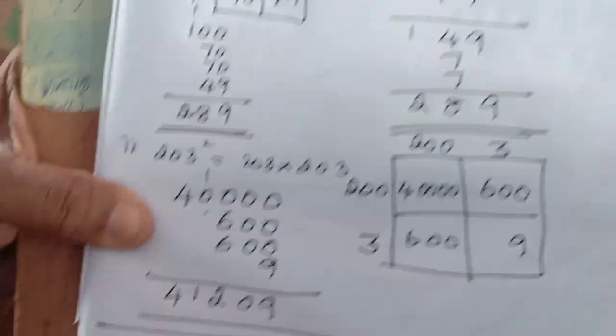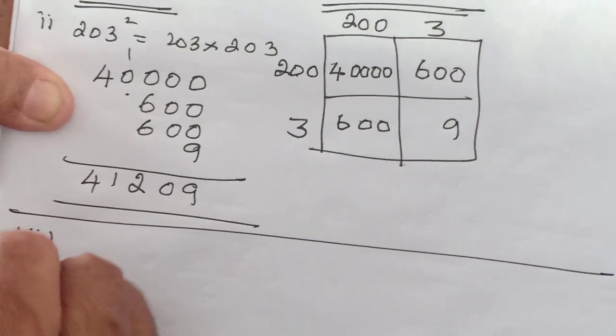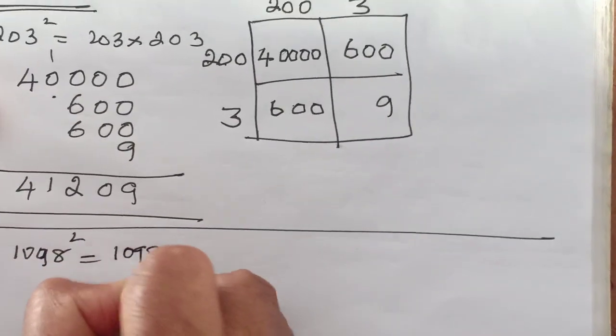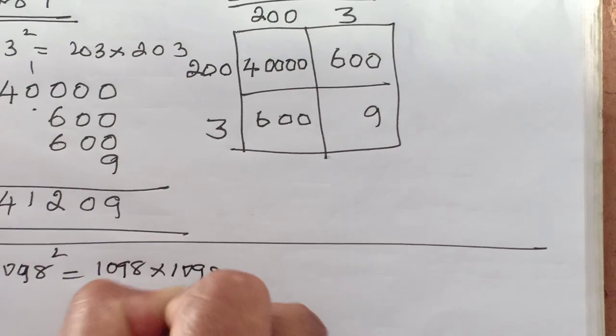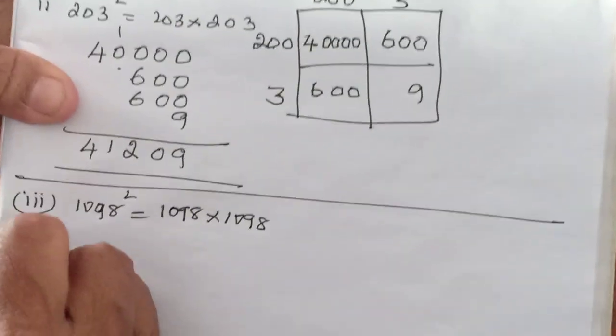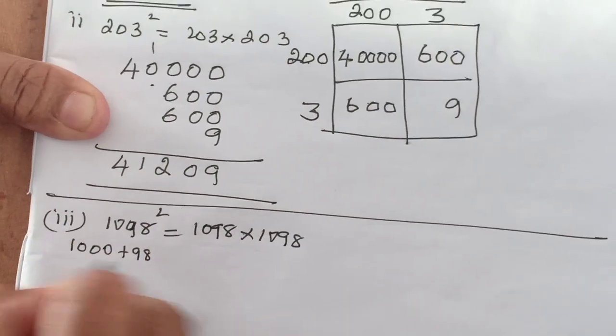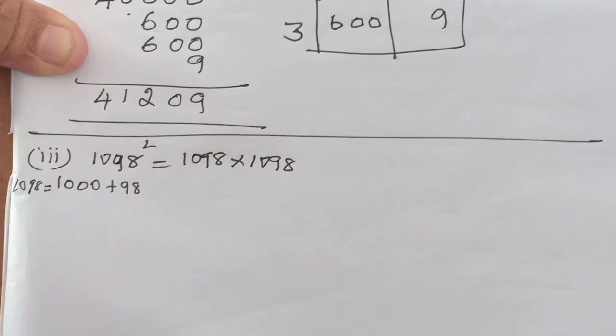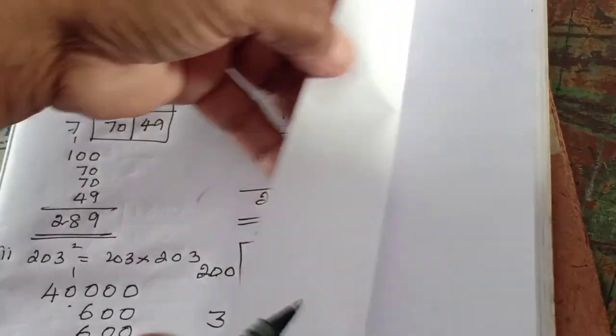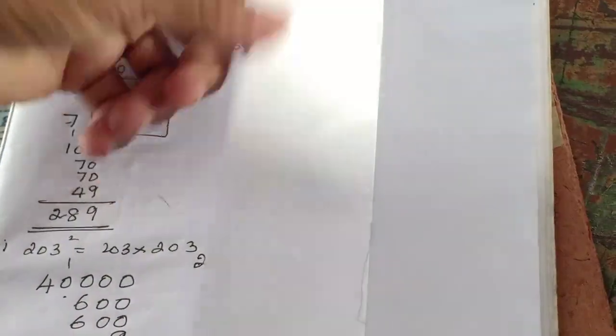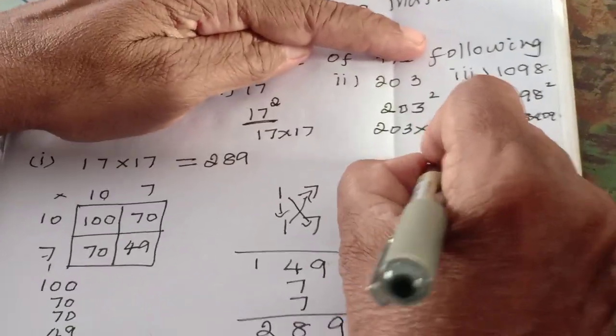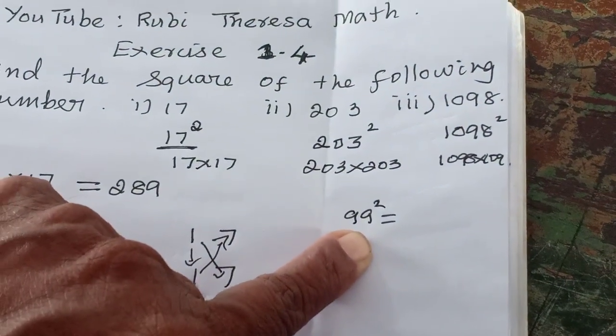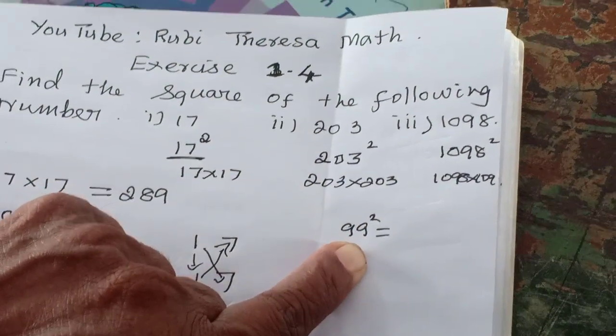Next one, 1098. 1098 square, so 1098 into 1098. Before doing this, how can we split this? 1000 plus 98. 1098 equal to 1000 plus 98. For this 98, I taught you the easy way. 99 square means how much less when comparing with 100?